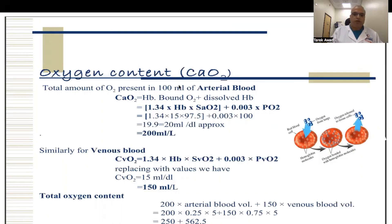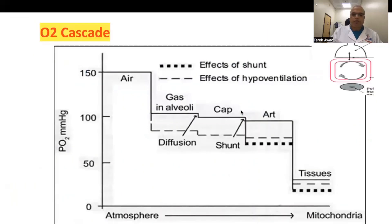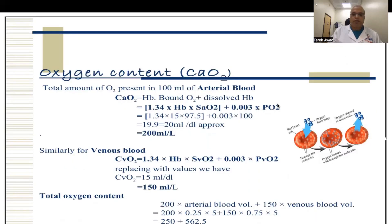The oxygen content in our body is calculated by the equation: 1.34 × hemoglobin × saturation + 0.0003 × PO2. This means PO2 has little effect on oxygen content; oxygen content is mainly determined by hemoglobin and how much it is saturated with oxygen. These are the two main factors. The oxygen content in arterial blood is around 200 mL per liter, 150 mL per liter in venous blood, and the total body oxygen content is around 812 mL.